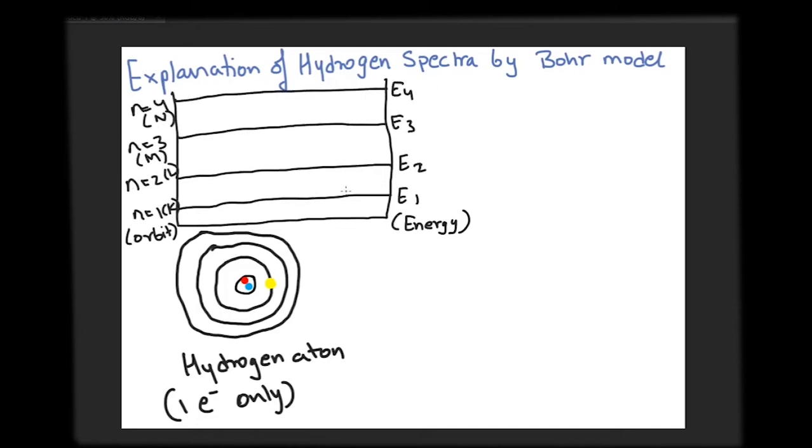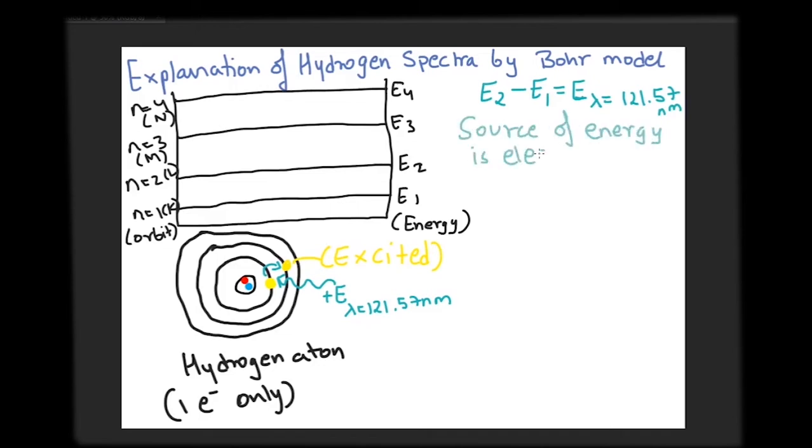So when an energy equal to the energy of a wavelength of 121.57 nm is given to the atom, the electron absorbs the energy and rises to a higher orbit from orbit 1 to orbit 2. This state of atom is said to be excited.